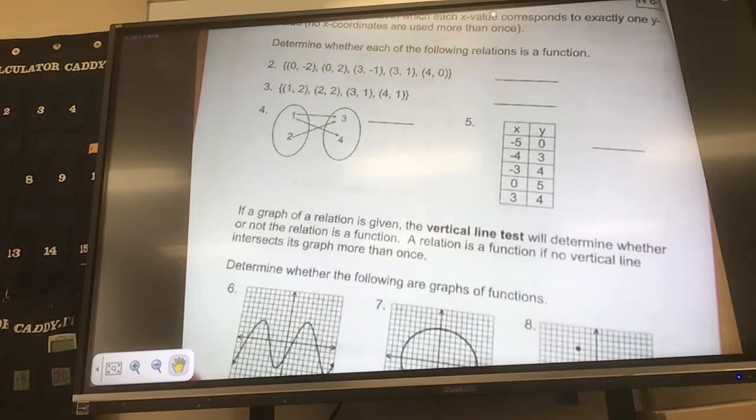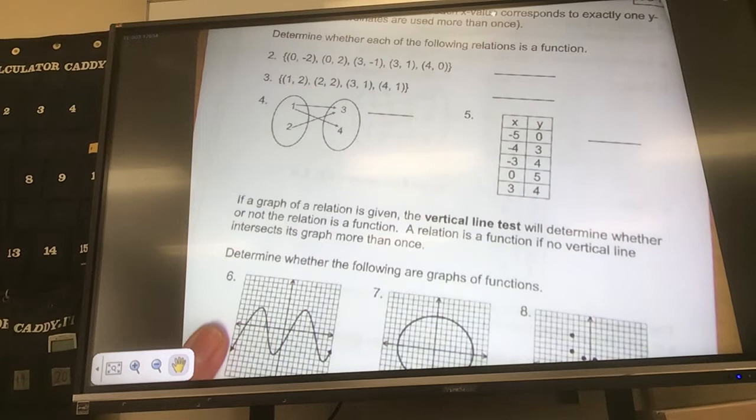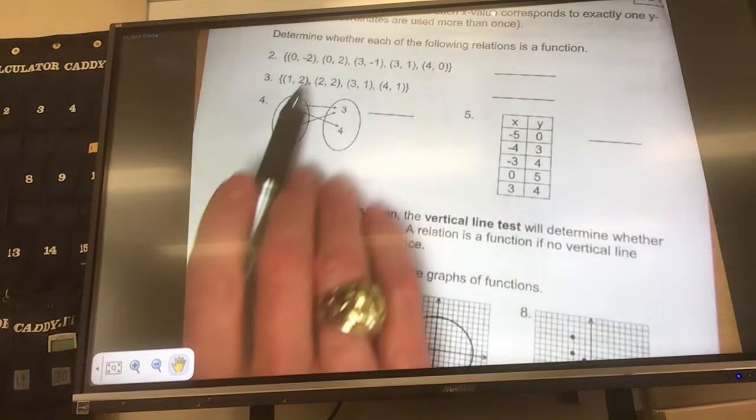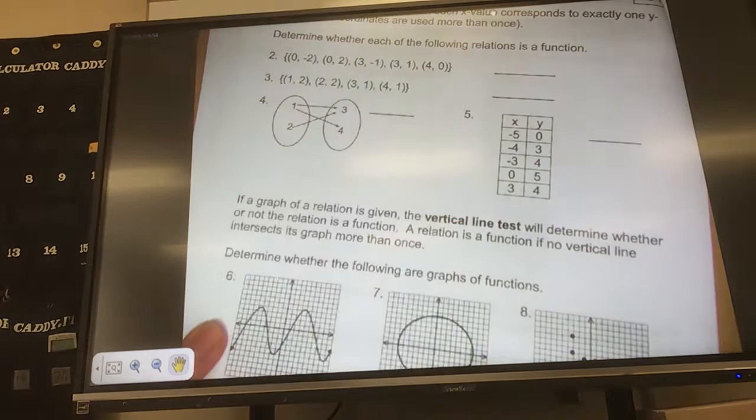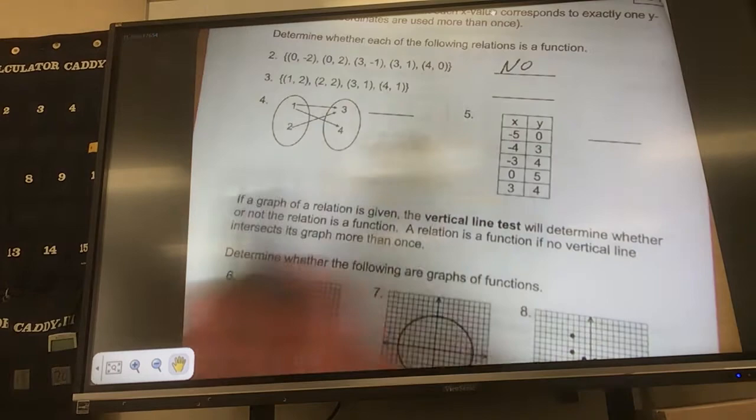Alright, so our next one, function, is when each x corresponds with only one y value. So if I'm looking at this guy, is it a function, this set? No, because this x is with negative 2, this x is with 2, so it is going with multiple y values, so no. How about number 3, is that a function? Yes, because each x value has only one y value, so yes, the x did not show up more than once.